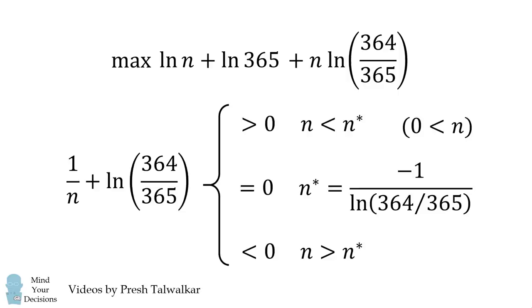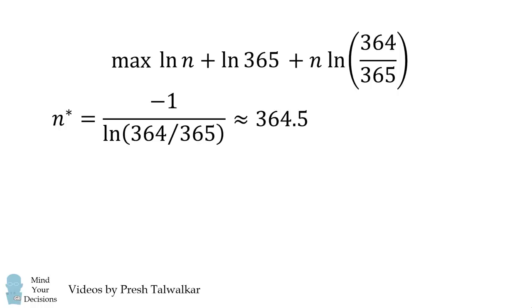We now consider what value this is, and we get 364.5 approximately. We're considering whole numbers of workers, so we're going to test the cases of N is equal to 364 and N is equal to 365.